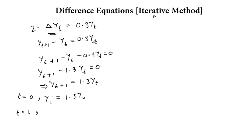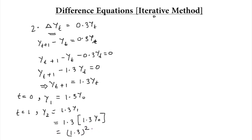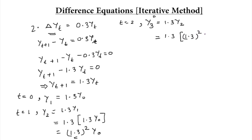Similarly, for t equal to 1, the equation becomes y2 is equal to 1.3·y1. Putting the value of y1 from the above equation gives y2 equal to 1.3² · y0. Similarly, for t equal to 2, y3 is equal to 1.3·y2, and substituting gives y3 equal to 1.3³ · y0.